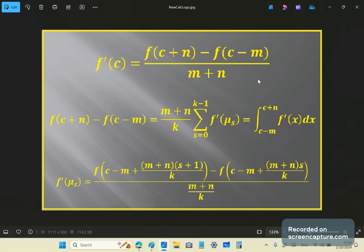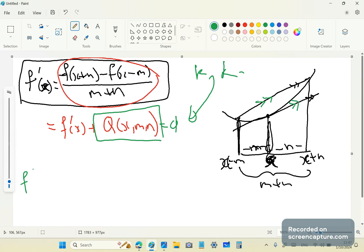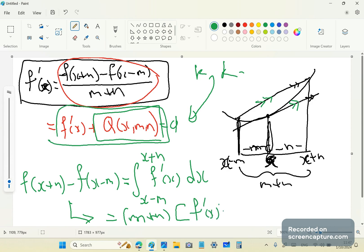Now, from this definition, we also derive the definition of the definite integral. And the definite integral is simply this. It's just simply f of x plus n minus f of x minus m, which is equal to the integral from x minus m to x plus n of f prime of x dx. But that's not how it's derived in the new calculus. The new calculus, this left-hand side would equal to m plus n multiplied by f prime of x plus qx m, n. So, this here is equal to the integral in mainstream.